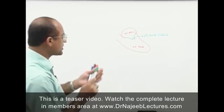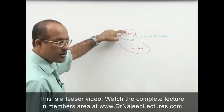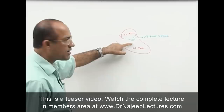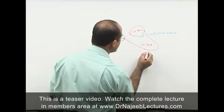On the left side of the heart, blood is initially received in the left atrium. From the left atrium, blood goes to the left ventricle through the mitral valve, and when the left ventricle contracts, it pushes the blood into the aorta.